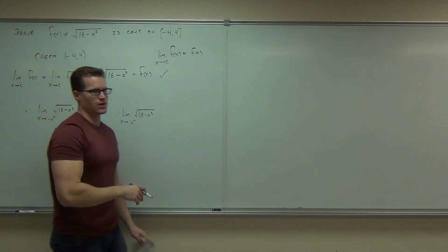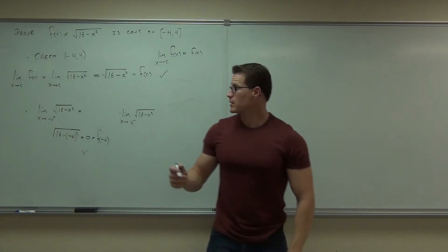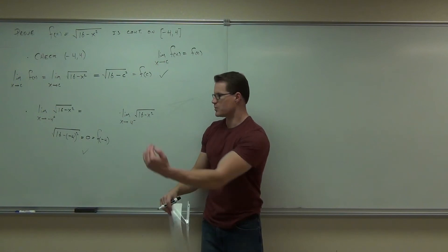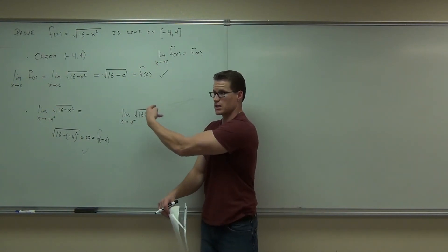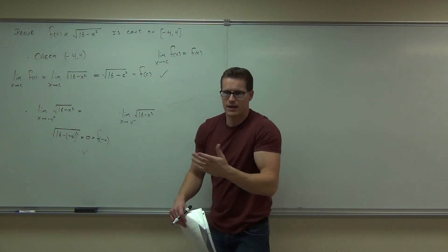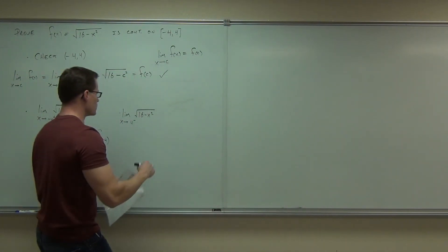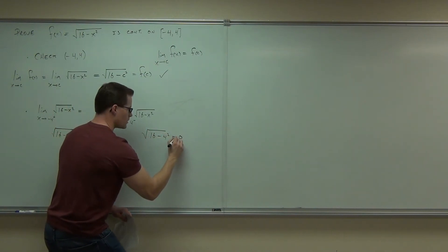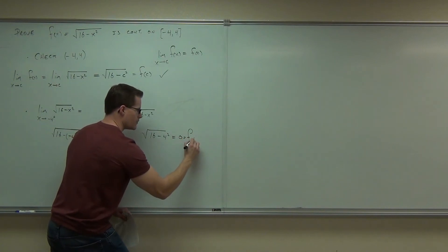We can do exactly the same thing for 4 from the left. If you plug in positive 4, is that going to have an issue over here? No. That means that as we get closer and closer to positive 4, this function's getting closer and closer to zero. True? So we can plug that in that the one-sided limit's going to exist. It says it's going to that value. So this would be the square root of 16 minus 4 squared, which is zero, which is exactly f of 4.